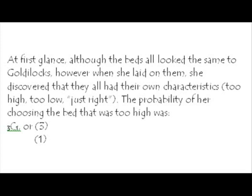she discovered they all had their own characteristics. They were either too high, too low, or just right. The probability of her choosing the bed that was too high was 3-choose-1, or C(3,1), which is a different way of writing 3-choose-1.